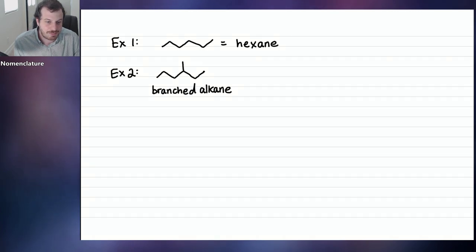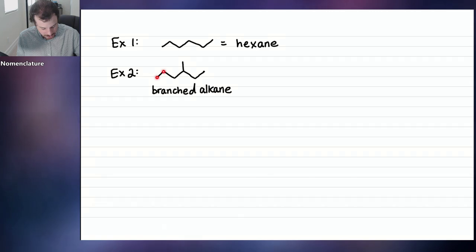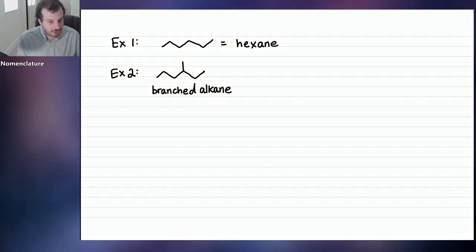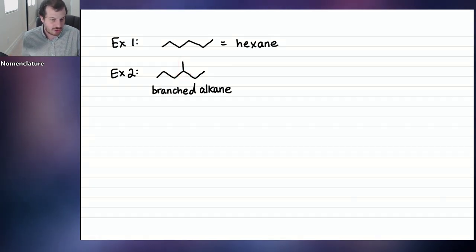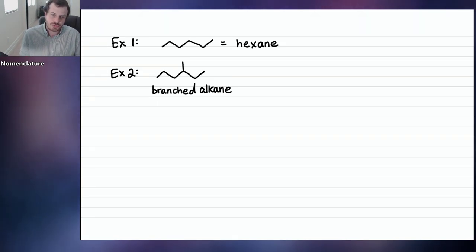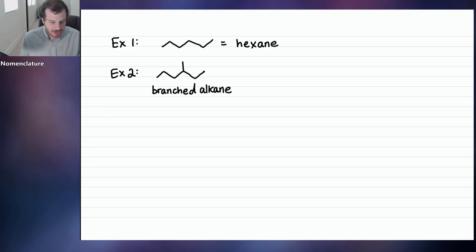It turns out we need a special way of naming this compound. You might think we'll just count the carbons — one, two, three, four, five, six, seven — seven carbons, so this is heptane. But that is false. After all, we would need some way to indicate where the branching occurs, and if we just say heptane, that doesn't transfer that information. So how do we name branched alkanes? The good news is it's similar to naming regular alkanes, but there's a twist.